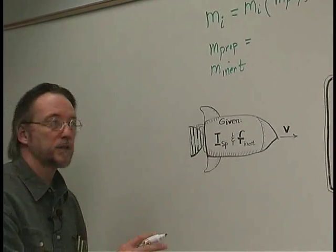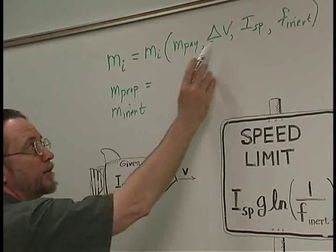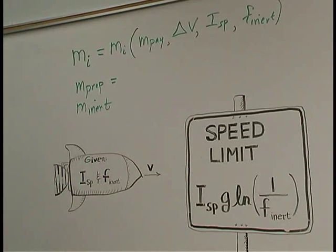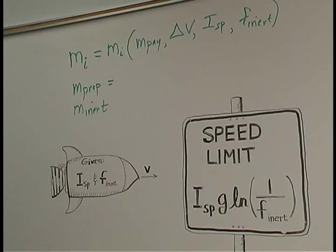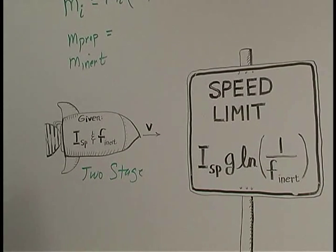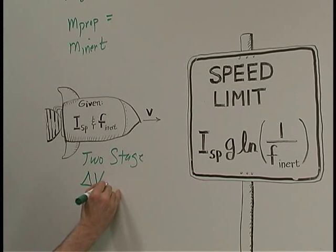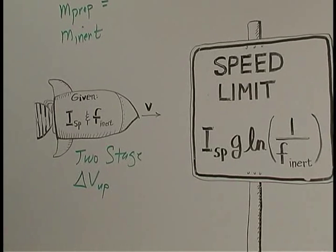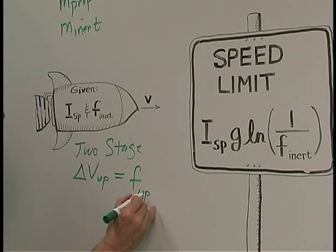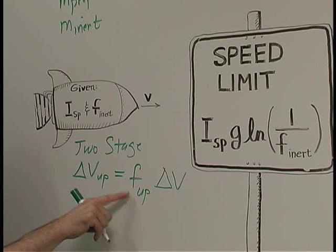A stage rocket allows us to break the delta V into pieces. So, for example, we could have one stage provide half of the delta V you need to get under the speed limit, and the second stage to provide the other half. So let's consider a two-stage rocket with an upper and lower stage, and let's give the burden of the upper stage the problem of achieving a delta V up. I'll use a fraction here, times delta V, where delta V is the total number, and so we could consider that this fractional value might be, say, around 50%.